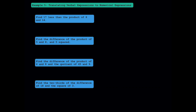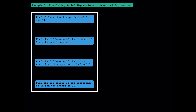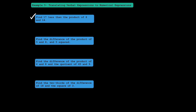In example five, we're going to translate verbal expressions into numerical expressions. Let's look at the first one: find 17 less than the product of 8 and 14. If we have to find 17 less than something, we subtract 17. Since product means multiplication, the product of 8 and 14 is 8 times 14. Our numerical expression is 8 times 14 minus 17. I'm just going to focus on translating in this example.